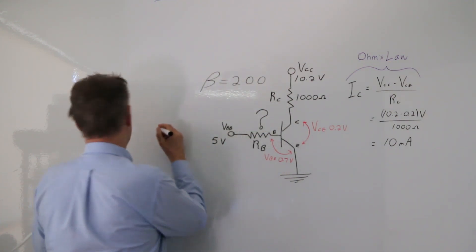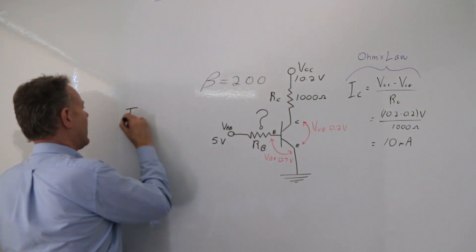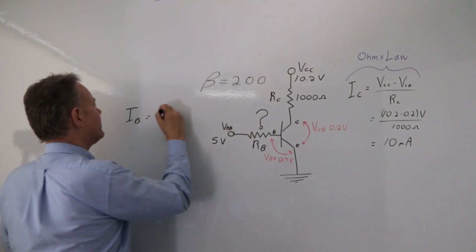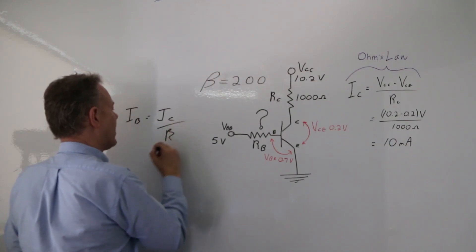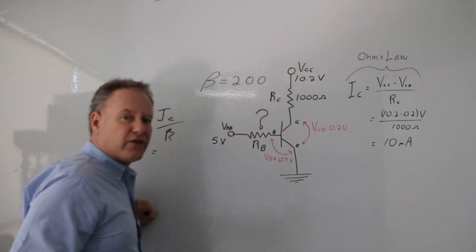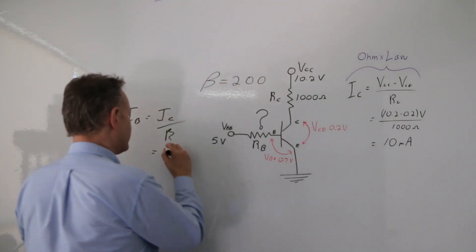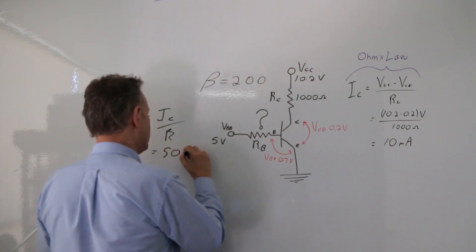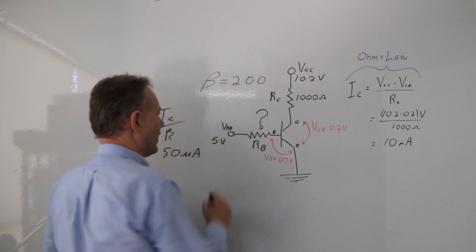My IB is going to be my IC divided by my gain. If you throw the numbers in there, it ends up to be 50 microamps.